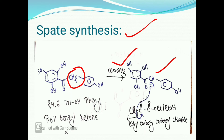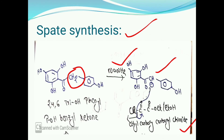This formed compound is treated with ethyl carboxy carbonyl chloride. The formula of ethyl carboxy carbonyl chloride is Cl-C(=O)-C(=O)-OC2H5. The CH⁻ ion attacks the C=O group, and at the same time, Cl is removed as Cl⁻.